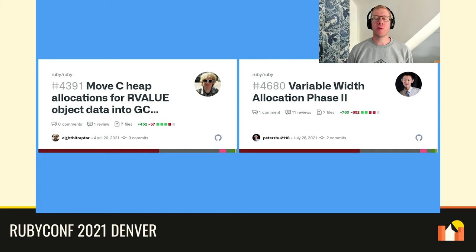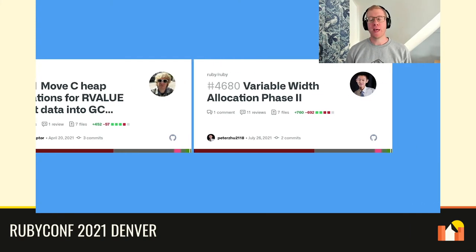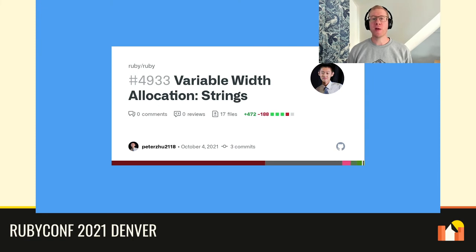In our first two pull requests, we built the infrastructure required to move data that would previously have been allocated on the system heap into a heap page alongside the R-value it's attached to, and we provided a reference implementation in R class. The changes up until now have been minimally intrusive, as this feature was turned off by default and required recompiling with a compile-time flag to enable it. In our latest pull request, we've implemented variable width allocation for strings, and because we're confident about its stability and performance, we've proposed to turn it on by default.